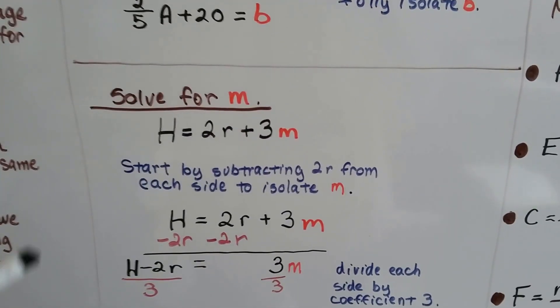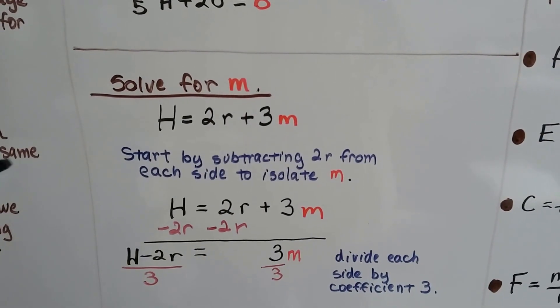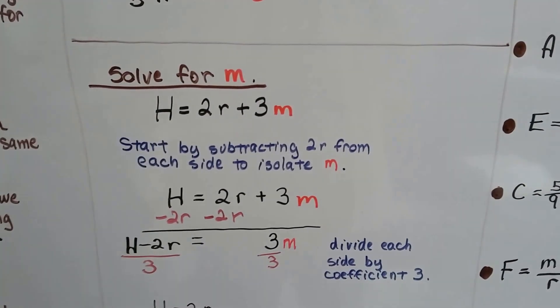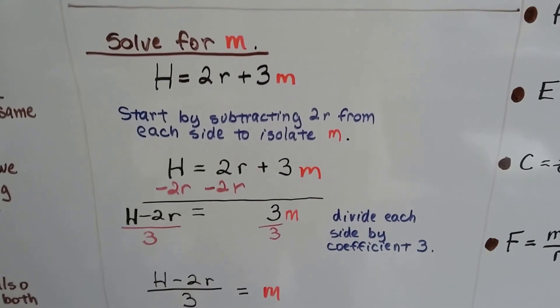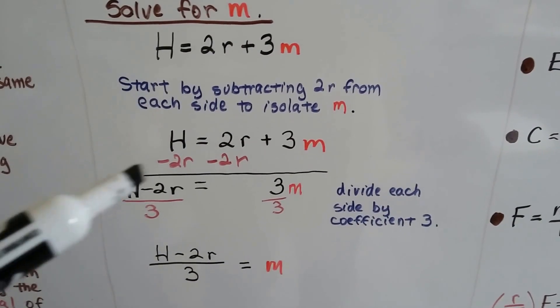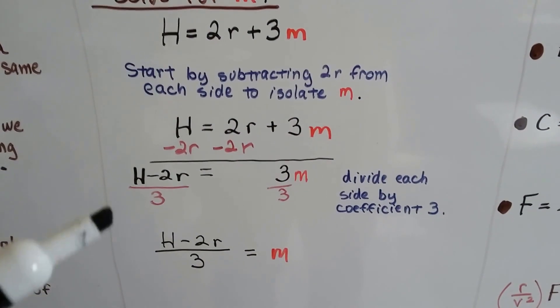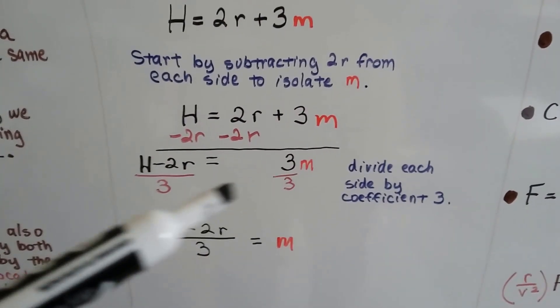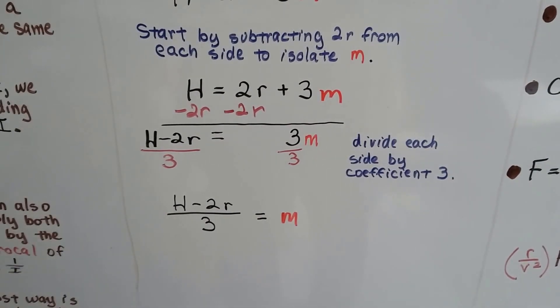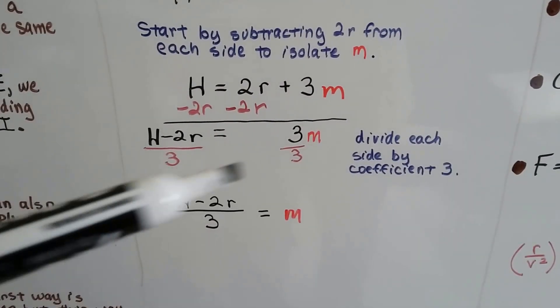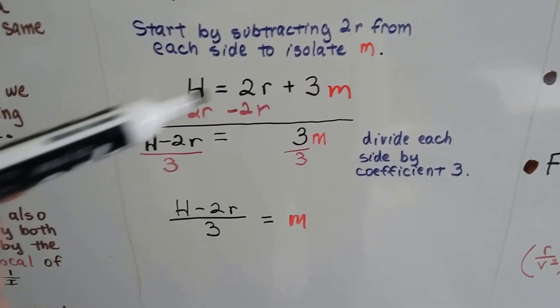Look at this one. It says solve for M. We have H equals 2R plus 3M. We can start by subtracting this 2R from each side of the equation to isolate the 3M and the M on its own. And we take away the 2R, and we get H minus 2R equals 3M. Now we can just divide each side by the coefficient 3. We get H minus 2R over 3 equals M. Just divide each side by that coefficient, and it's pretty quick. There's no fractions in this.